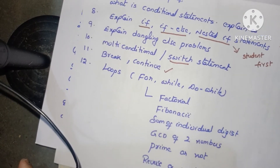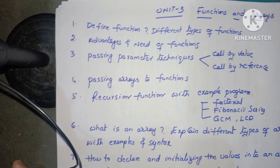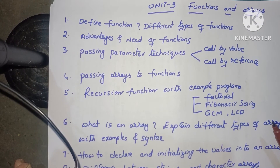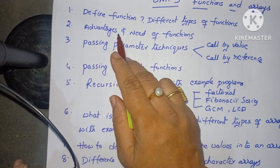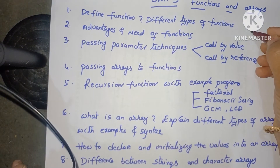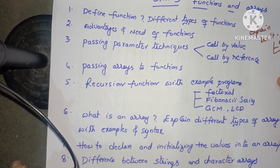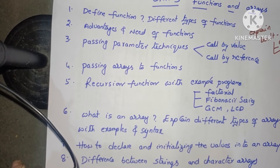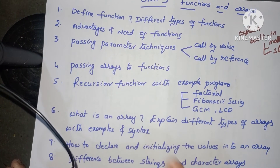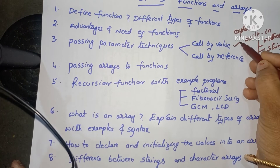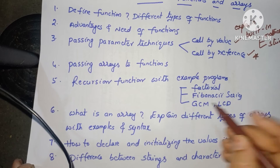Unit 3 — functions and arrays. 'Define function' and 'Explain different types of functions' — user-defined functions, built-in functions, advantages and need of functions. Explain built-in functions such as mathematical functions and string functions. Very important: 'What are the parameter passing techniques in functions?' — call by value method and call by reference method. Swapping of two numbers using call by value or call by reference are very important questions.